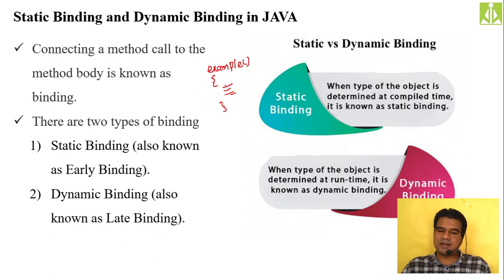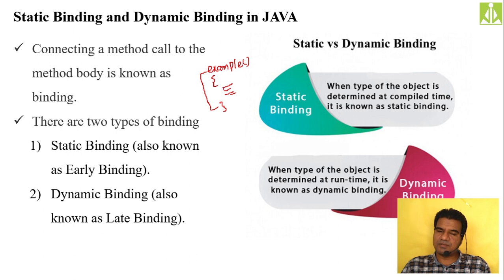This is my method definition — the example method definition. To get the actions from this method I need to call it, putting the method call somewhere in my program. When the compiler sees the example method call, it goes to the body of that example method and executes it.